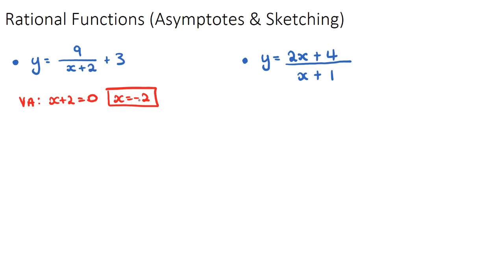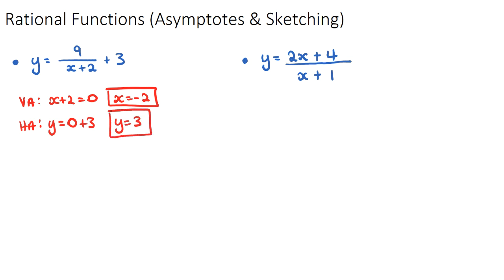The horizontal asymptote is a y-equals equation. We look at the fraction part of the rational function and check if there are any x's on the numerator. In this case there are no x's on the top, so the horizontal asymptote starts at y equals zero. However, we need to consider any vertical shift — a plus or minus constant at the end of the function. Since there's a plus three, the function shifts up three units, making the horizontal asymptote y equals three.